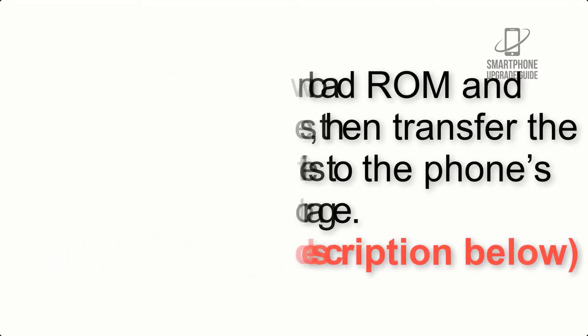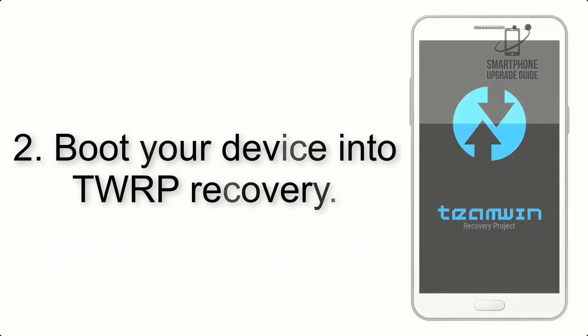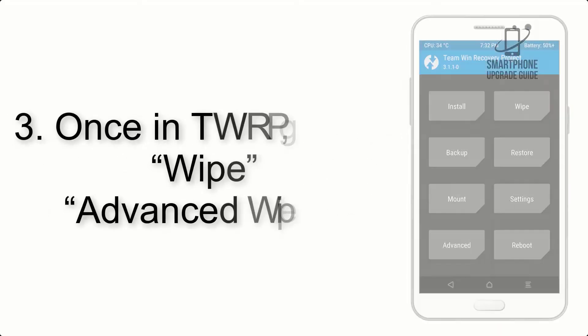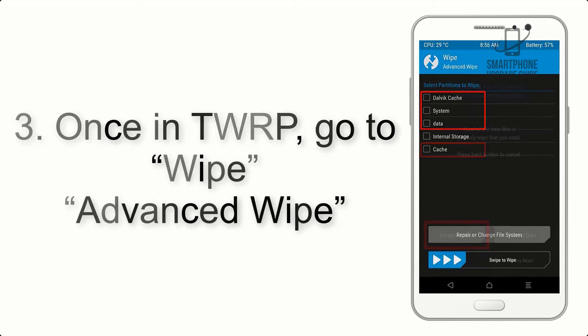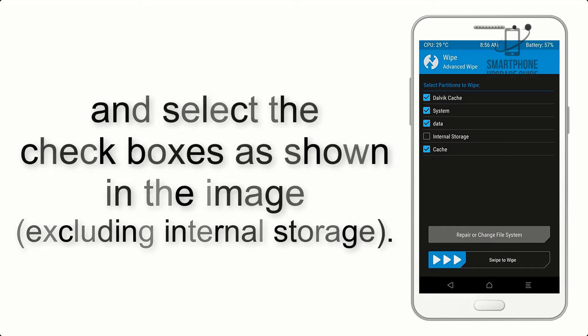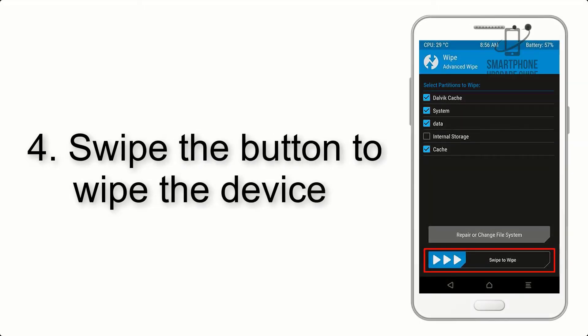Step 2: Boot your device into TWRP recovery. Step 3: Once in TWRP, click on Advanced Wipe and select the checkboxes as shown in the image, excluding internal storage.